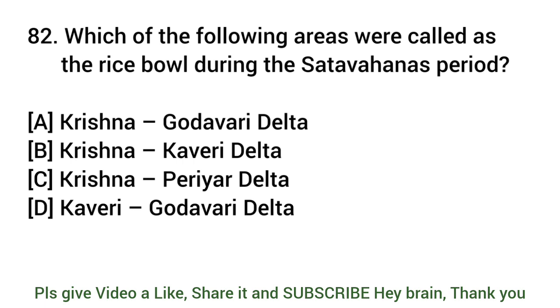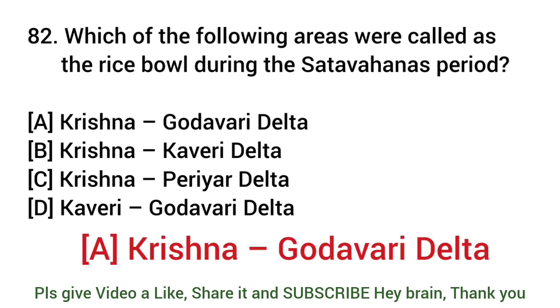Which of the following areas were called as the rice bowl during the Satavahanas period? Answer: Krishna Godavari Delta.